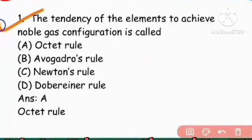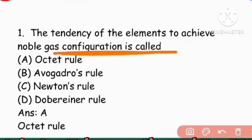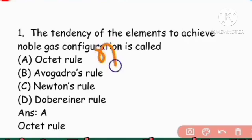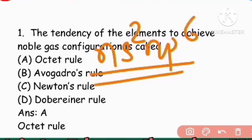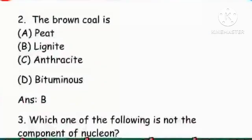Question 1: The tendency of an element to achieve noble gas configuration is called what? Noble gas configuration means stable electronic configuration — ns2 np6 — meaning the octet is complete. So the octet rule is the right answer. Option A is correct.